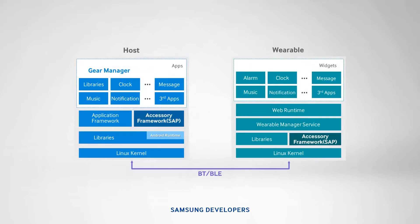Shown is the architecture of the host and wearable software. We can see that they both have the accessory framework, also known as the Samsung Accessory Protocol or SAP, in their architecture. SAP accesses the protocol for their communication with Bluetooth or Bluetooth Low Energy.